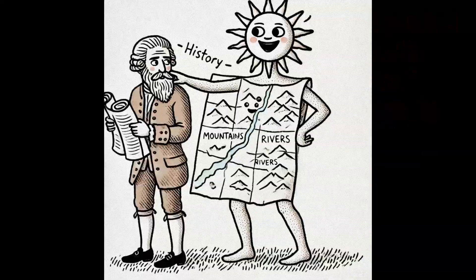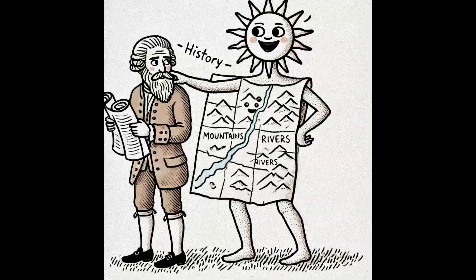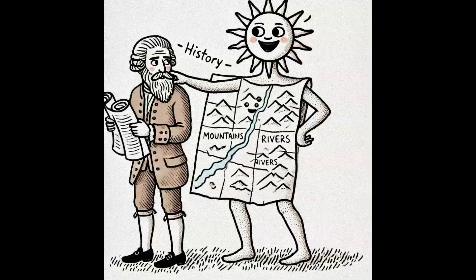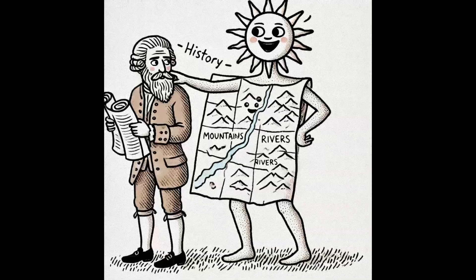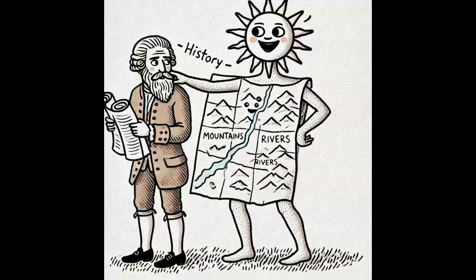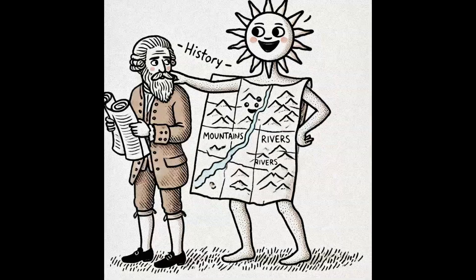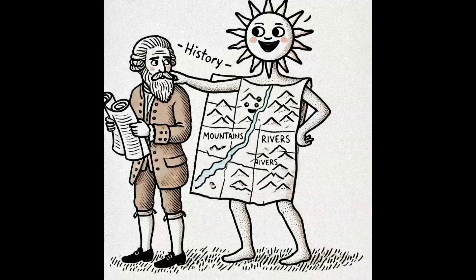Environmental determinism emphasizes that we can't study humans separately from their environments. Our relationships with the Earth are far more complex than those of animals or plants. Fields like anthropology, sociology, and history often miss the full picture because they don't thoroughly analyze the geographic factors at play.